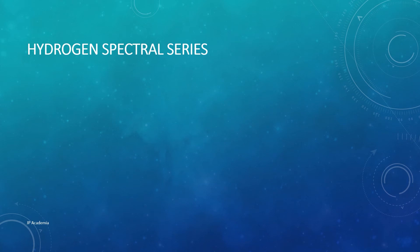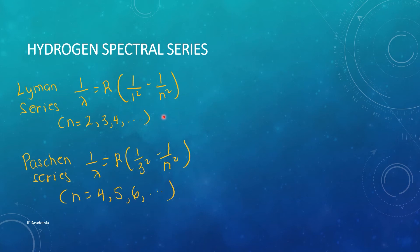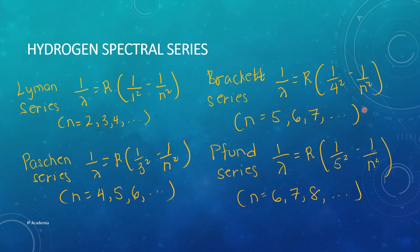There are also other spectral series discovered for hydrogen, named after their discoverers. First is the Lyman series. Lyman is in the ultraviolet, while the next one, we have the Paschen series with this equation. And this is under the infrared. Next is the Brackett series, still under the infrared. Last series is the Pfund series, still under the infrared.